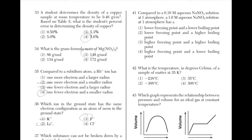Compared to a 0.1 M aqueous NaNO3 solution at 1 atmosphere, a 1 M aqueous NaNO3 solution at 1 atmosphere has a lower freezing point and a higher boiling point. The higher the total concentration, the lower the freezing point and the higher the boiling point. Since 1 M is a greater concentration than 0.1 M, the answer is choice 2.